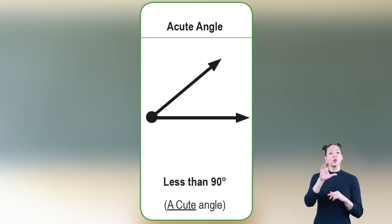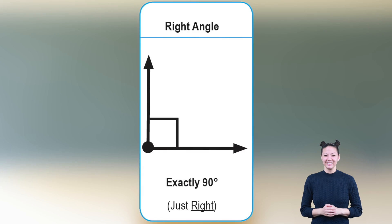An acute angle is less than 90 degrees—a cute angle! A right angle is exactly 90 degrees. It's just right.